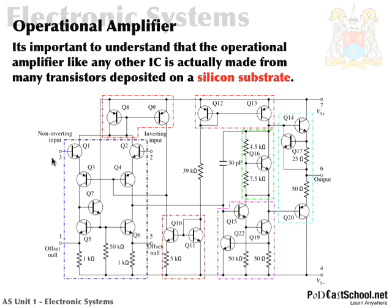You can even see the non-inverting input there — that's pin three — along with something called an offset, which we haven't spoken about, the supply voltage, the output, and the inverting input. That just confirms and reconfirms the point that everything is made up of transistors. That's it for now. Any questions, email me at info@podcastschool.net.